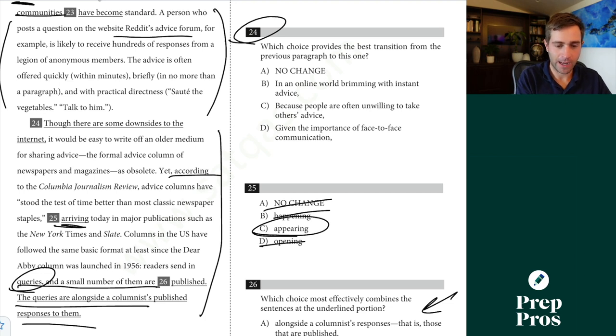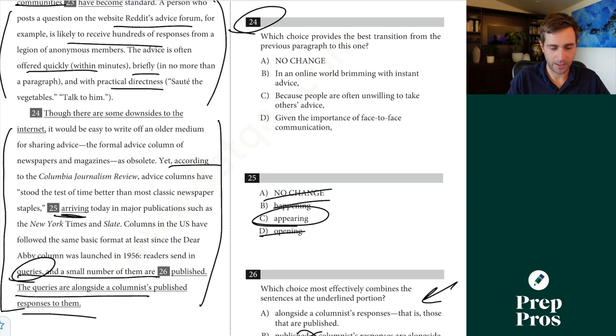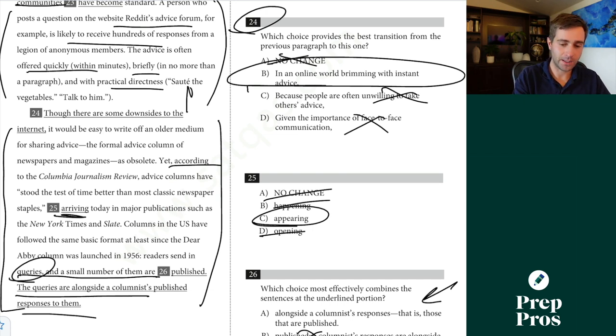But before I forget 24 here, which choice provides the best transition from the previous paragraph to this one. All right. So this was really just talking about how people can post stuff online and they get these really quick and brief kind of responses. Then here we're kind of bringing back like these older mediums of sharing advice. We're saying they've existed for a long time. Readers send in basically their questions and then the columnist answers them. So we're not talking about downsides to the internet. We're not talking about the fact that people are unwilling to take the advice or the importance of face to face communication. This is the only one that makes sense. We're saying in an online world brimming with instant advice like you get on Reddit. Well, it would be easy to write off an older medium for sharing advice as obsolete. And now we're kind of introducing that one, which isn't so instant.